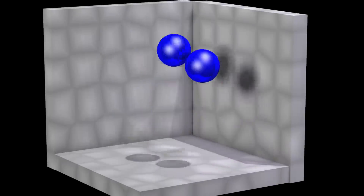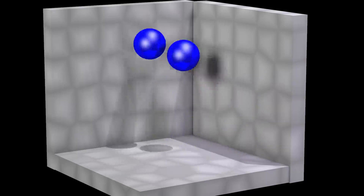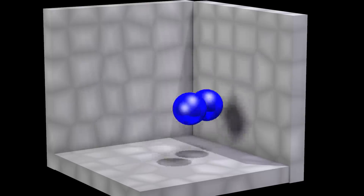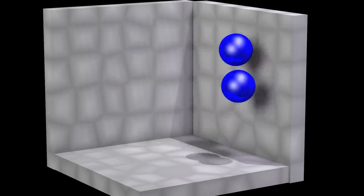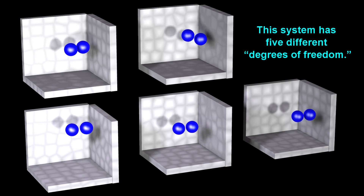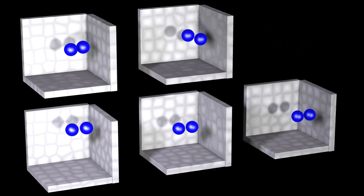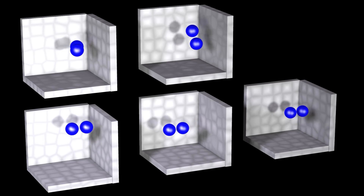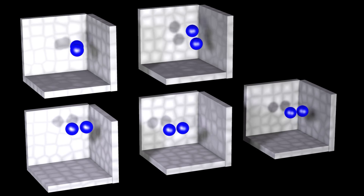Now, let's consider a system consisting of one molecule containing two atoms. This system can also have rotations. This system has five different degrees of freedom: three of these are the motions in the X, Y, and Z directions, and the remaining two degrees of freedom are two different types of rotations.